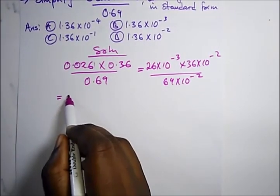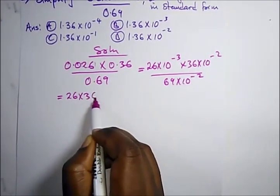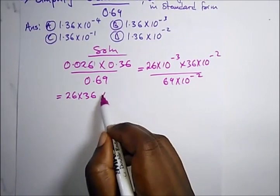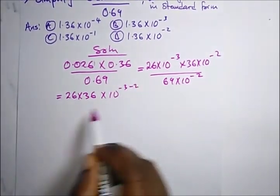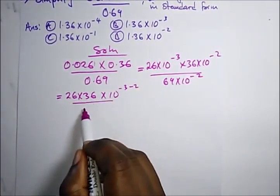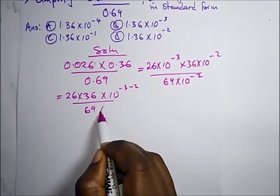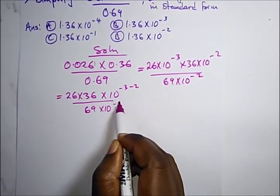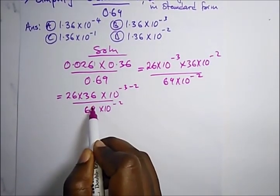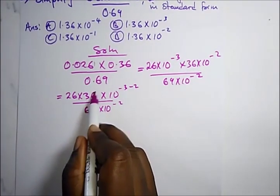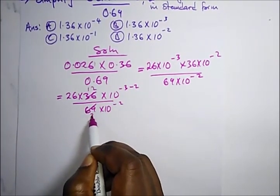To simplify, we have 26 × 36 × 10^(−3−2) over 69 × 10⁻². Something can cancel out: 3 goes into 36 twelve times and into 69 twenty-three times.